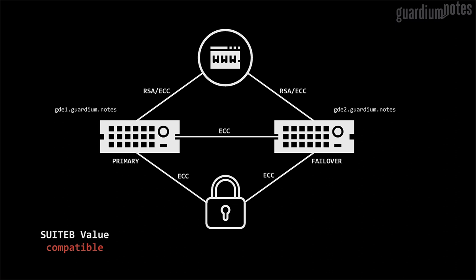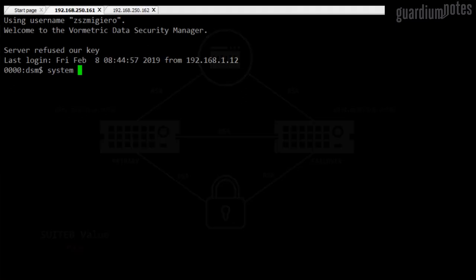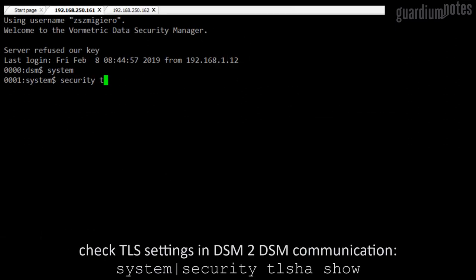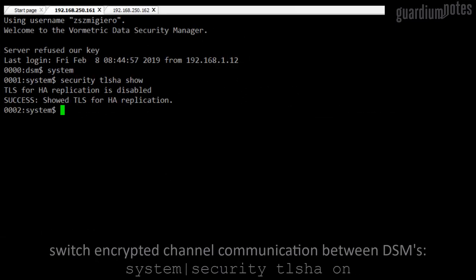The suitB command has three possible values: Compatible (which is the default), suitB, and RSA. Personally, I recommend using the default configuration, where web access uses RSA by default and it is possible to communicate using ECC, while the remaining elements use an algorithm based on elliptic curves. In the case of the suitB setting, only elliptic curve cryptography is used. When the value is set to RSA, all elements use the Rivest-Shamir-Adleman algorithm. I enable channel encryption between DSMs and check the algorithm settings.